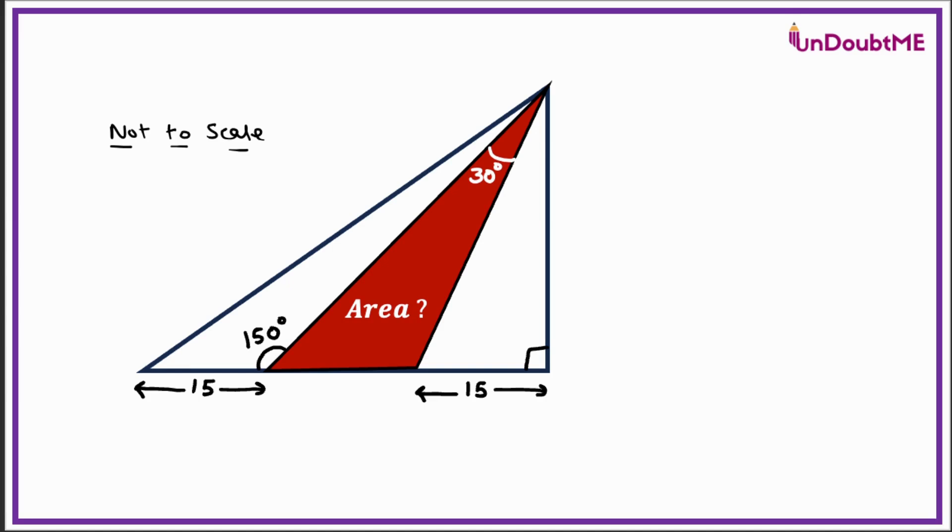Let us begin. They have given us 150°, so I can take the internal angle that will be 30°. Then the two angles of the triangle are 30°, so I can get the third angle that will be 180° minus 60°, so that will be 120°. And with 120°, I can get the outer angle as 60°. Now with this 60° we can use SOHCAHTOA and we can get these two sides.